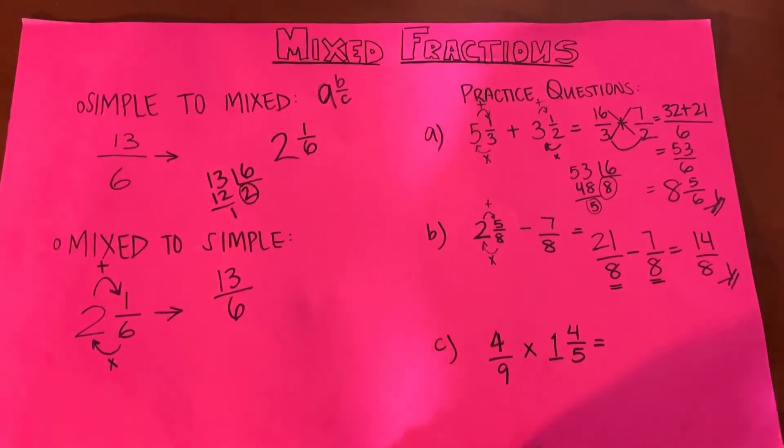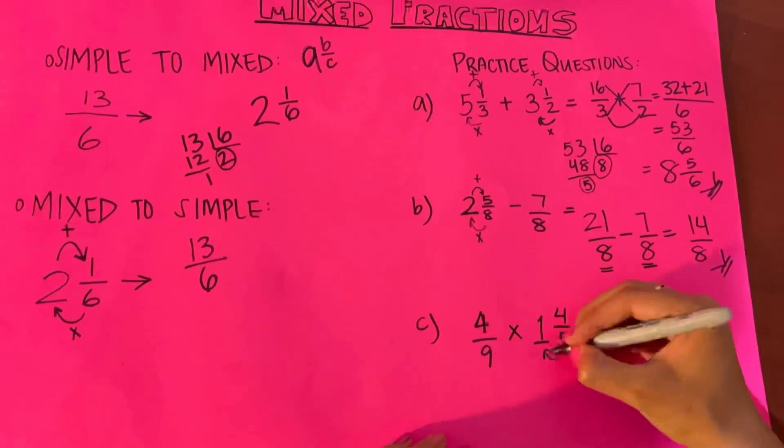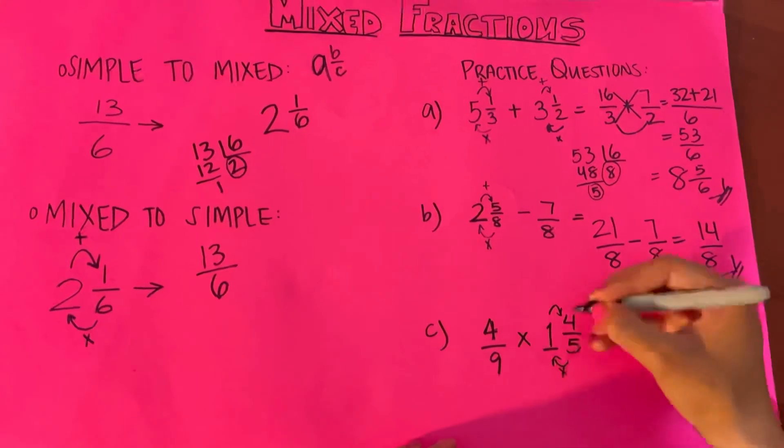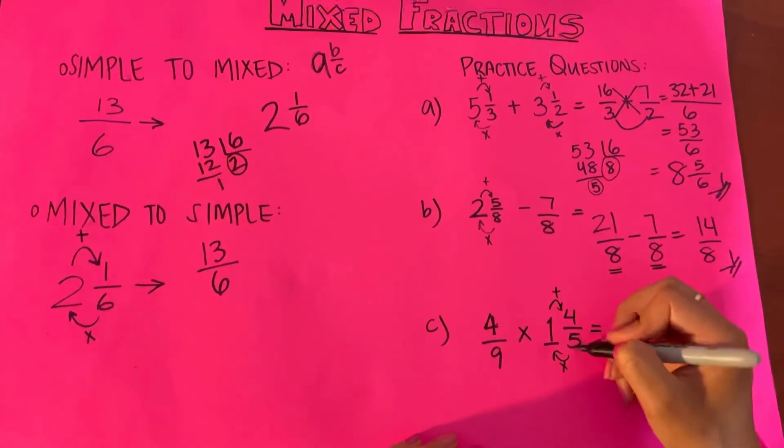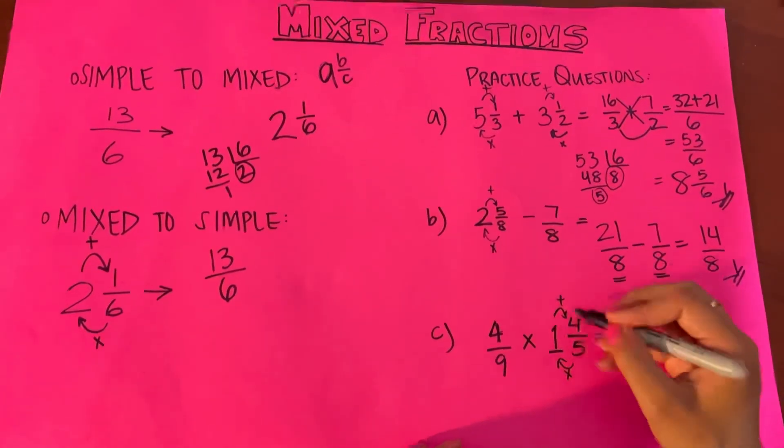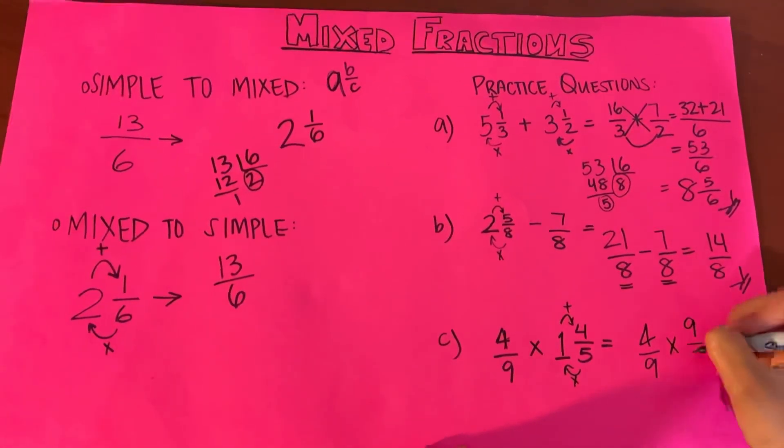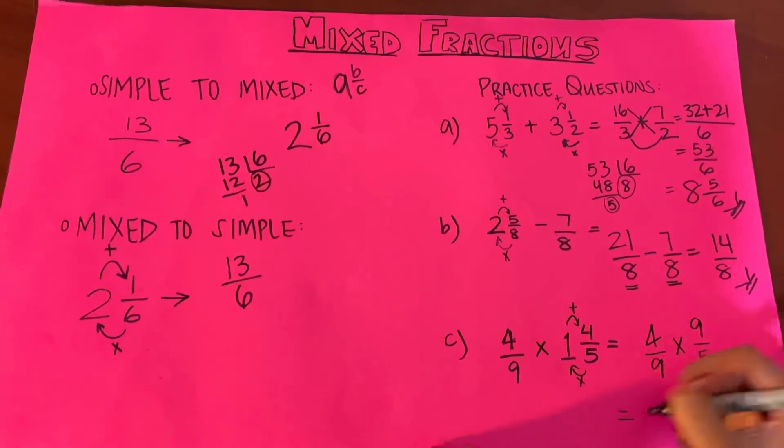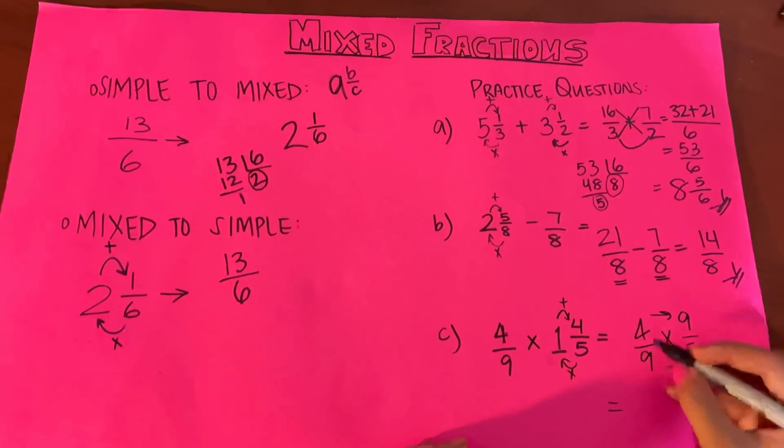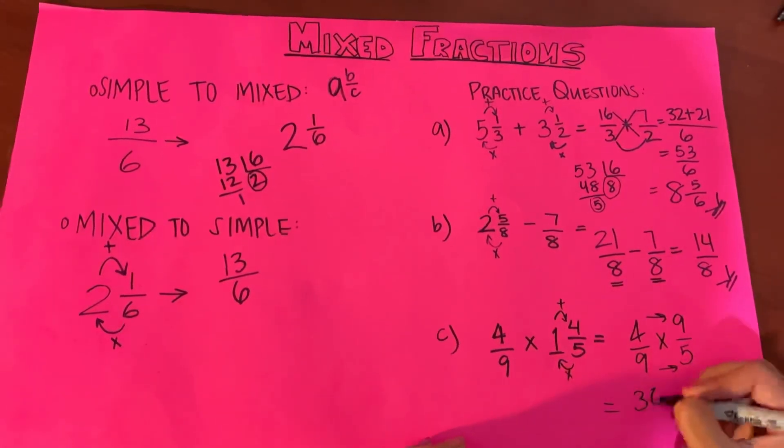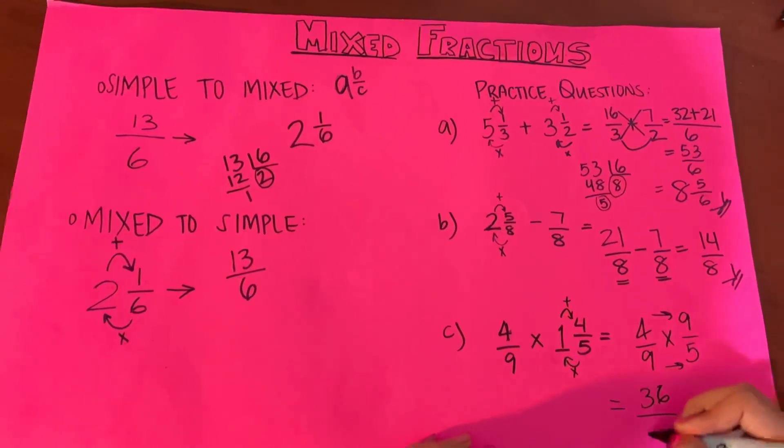Straightforward question, the same concept. Let's convert this: 4 upon 9 multiplied by 5 multiplied by 1 is 5 plus 4, 9. So 9 upon 5. And when you multiply fractions, you just go straight away. So 4 multiplied by 9 is 36, 9 multiplied by 5 is 45.